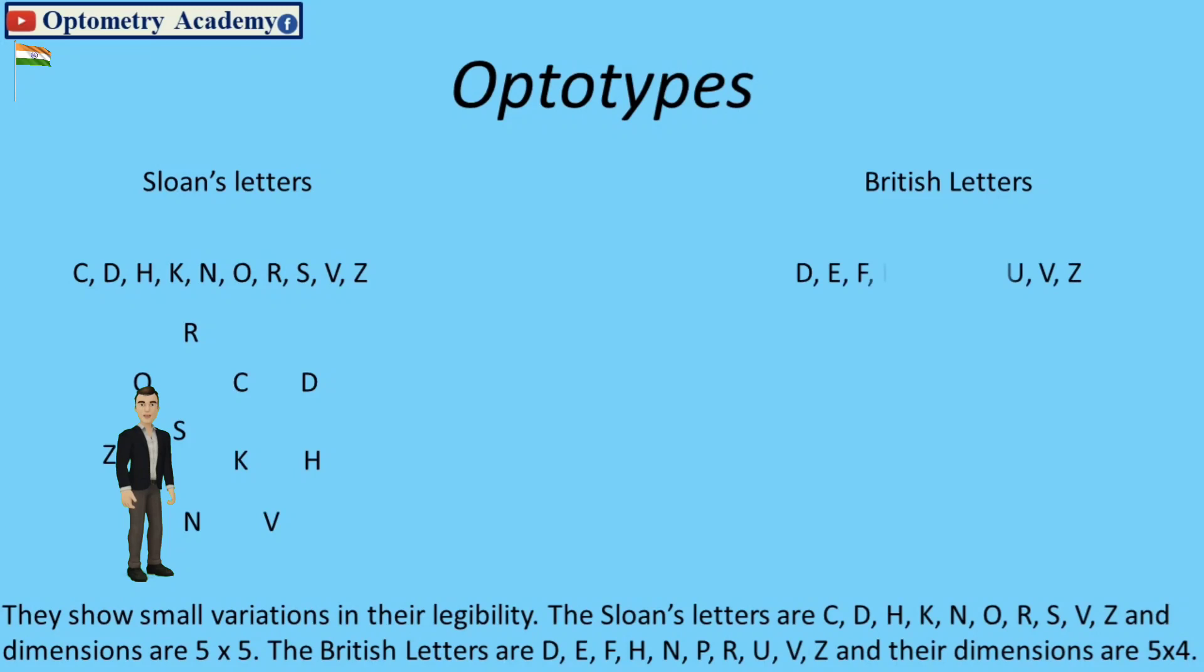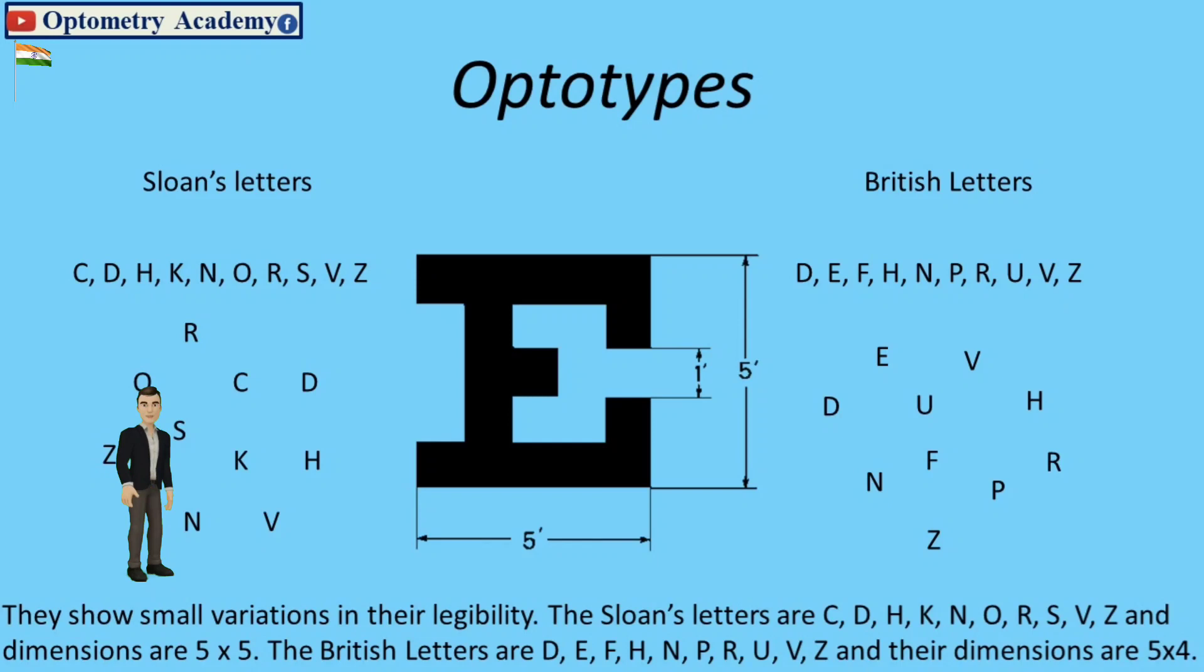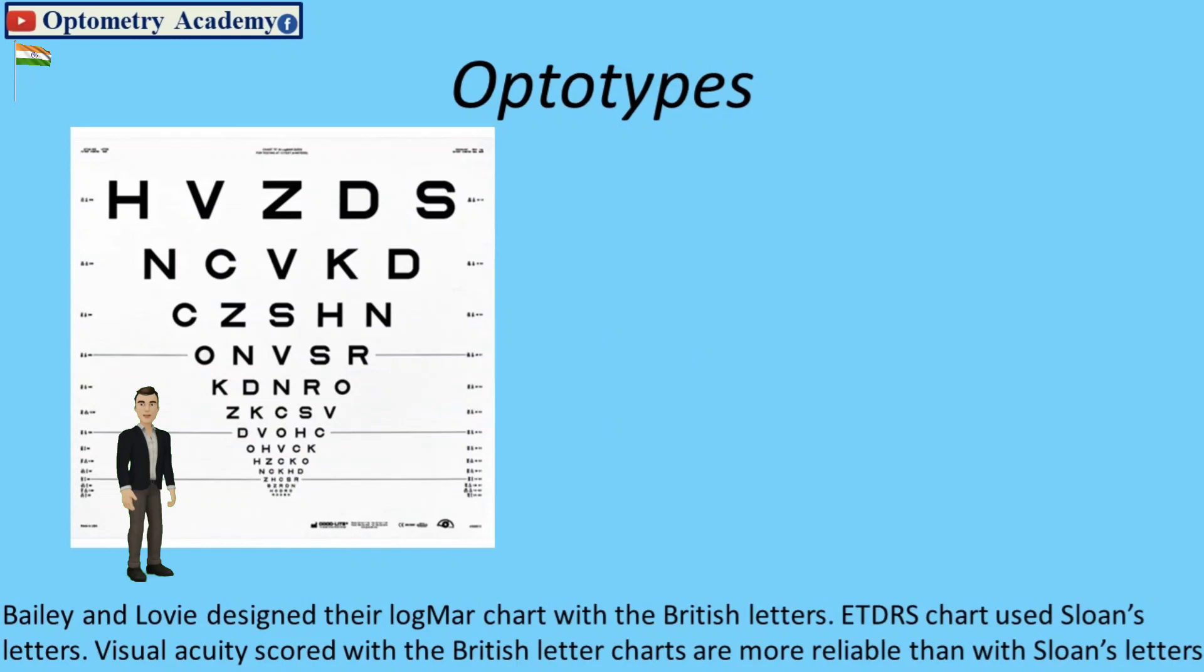The British letters are D, E, H, N, P, R, U, V, Z and their dimensions are 5 x 4. Balian Lobby designed their LogMAR chart with the British letters. ETDRS chart uses Sloan's letters.